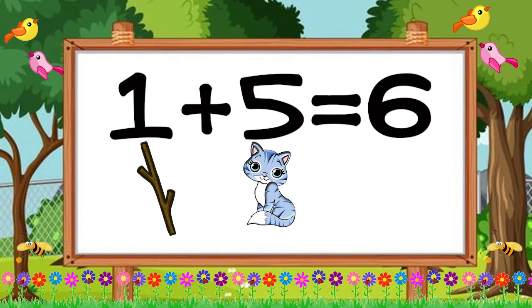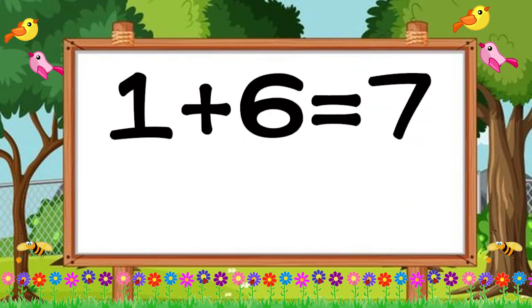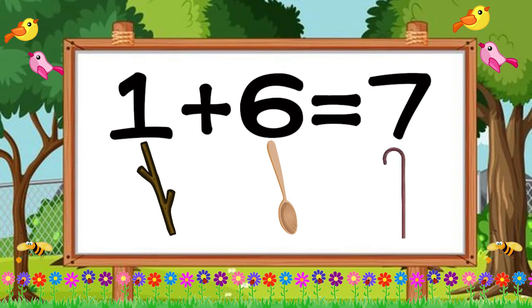Six like a spoon. And we're going to add one plus six. One like a stick and six like a spoon is equal to seven. Seven like a walking stick.